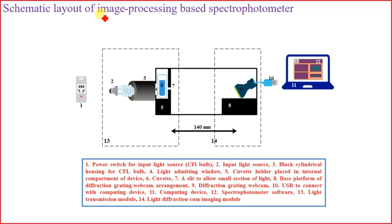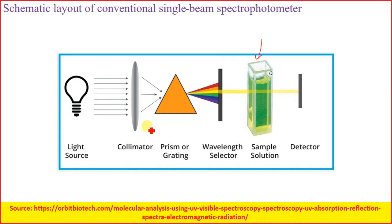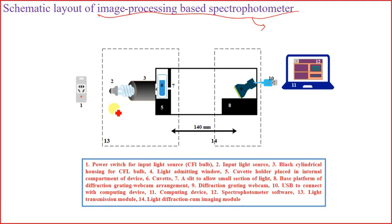When talking about an image-processing-based spectrophotometer, it is essentially a single beam spectrophotometer. The architecture has a light source, some optics, then the solution, then a detector — just like a single beam spectrophotometer. So the measurement procedure remains the same: you measure the reference spectrum first and keep it recorded in memory, then subtract it from the test measurement.